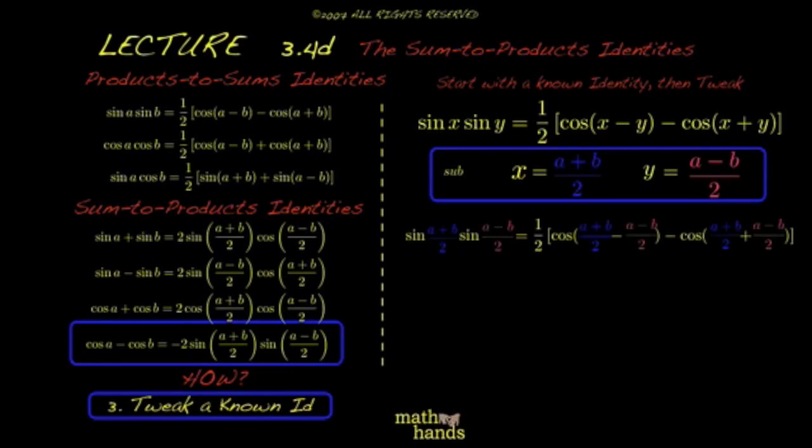So wherever you see x, that gets replaced with (a + b)/2. Wherever you see y, it gets replaced with (a - b)/2. Notice these things inside the parentheses clean up nicely. That will give you a + b - a + b, which will give you b, I believe, because that whole thing is over 2. Similarly, this one cleans up nicely - that's equal to a when it's all said and done.